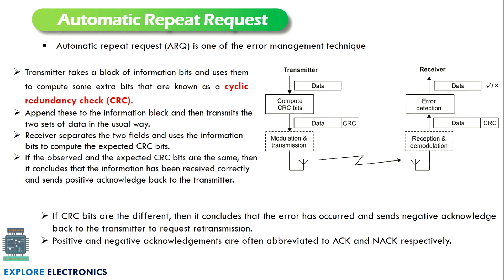The next concept is automatic repeat request, called ARQ technique — another error management technique. We have a transmitter at one end and receiver at the other. The transmitter has data to be transmitted, which is given to compute CRC bits. CRC — cyclic redundancy check — is extra information added with the data. These check bits are included with the information to be sent.